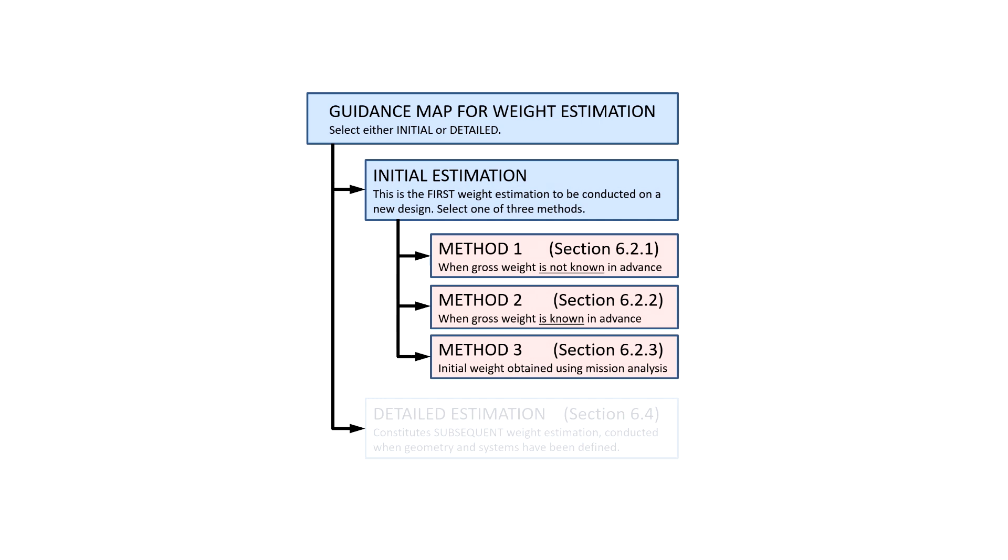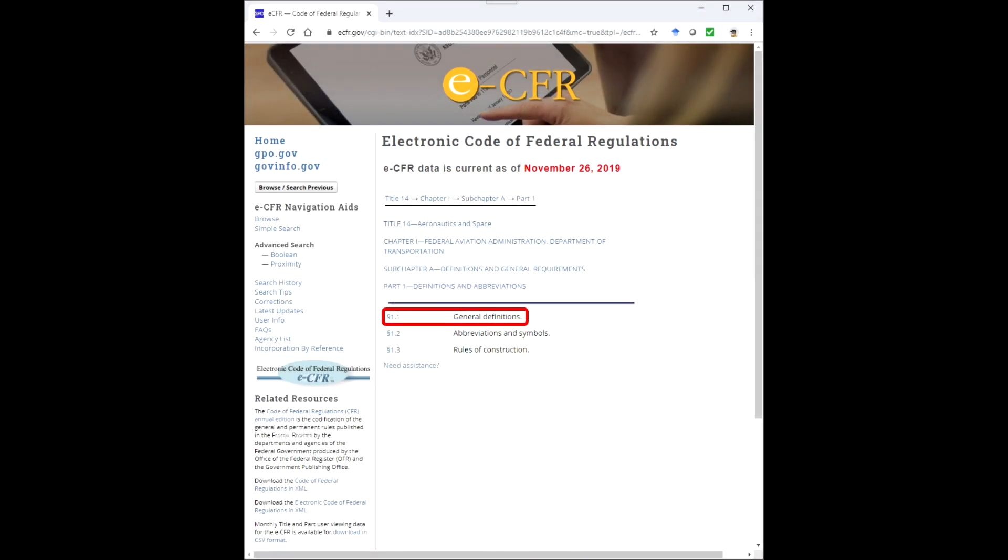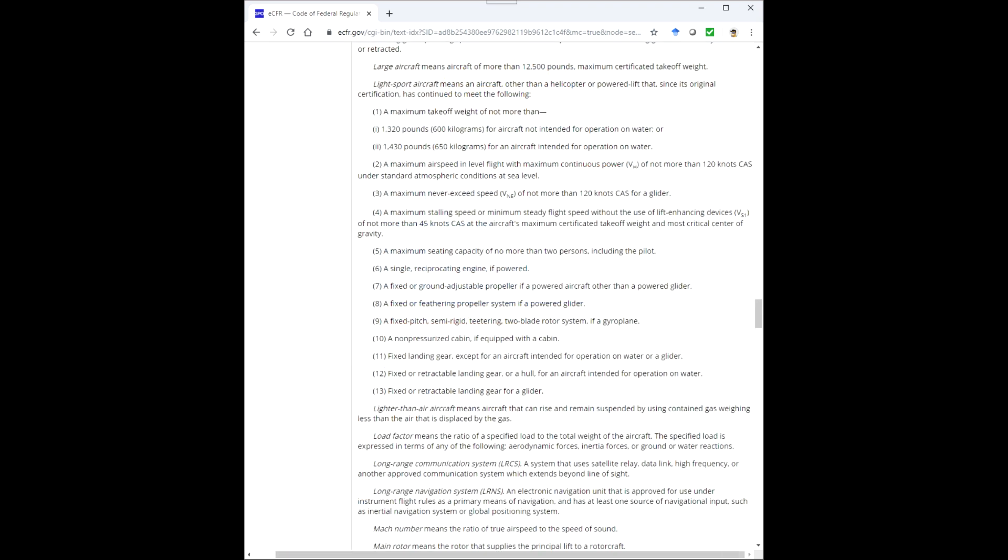With respect to the first one, occasionally there are situations in which we know the gross weight in advance. For example, 14 CFR Part 1.1 dictates that LSA aircraft must have a maximum gross weight of 1320 pounds if land plane, and 1430 pounds if amphibious.